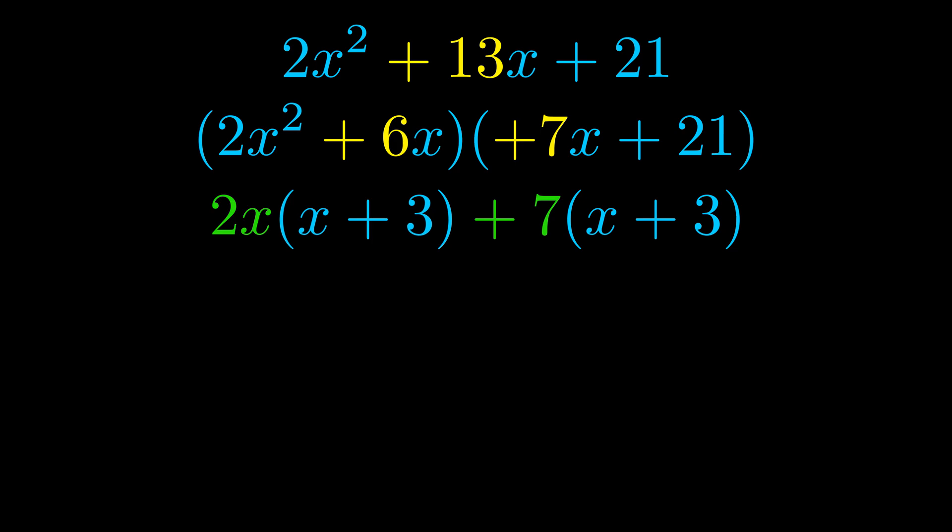Notice also how what remains inside of the parentheses is the same in both cases. The blue values are the same. Those blue values will become one of our factors and we will combine the two green values, the GCFs that we pulled out, to get the other one. And that is our fully factored equation.